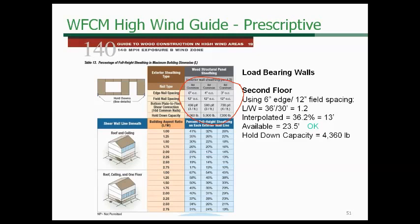Q&A on brick as a brittle finish: Brick deflection limits may be as much as H/600 depending on the manufacturer — more restrictive than the L/360 covered in the WFCM tables. In those cases, the engineer would need to perform a deflection check independent of the WFCM, using the NDS deflection check provisions.